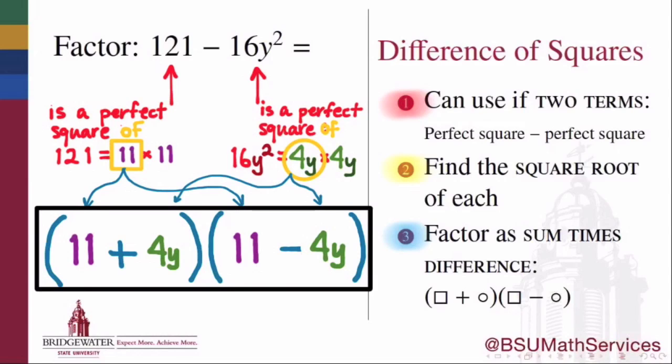So the difference of squares method may be used any time you are trying to factor an expression which is one perfect square minus another perfect square. Once you recognize that that's the kind of expression you are factoring, you can factor it as the product of the sum of the square roots of those terms times the difference of the square roots of those two terms.